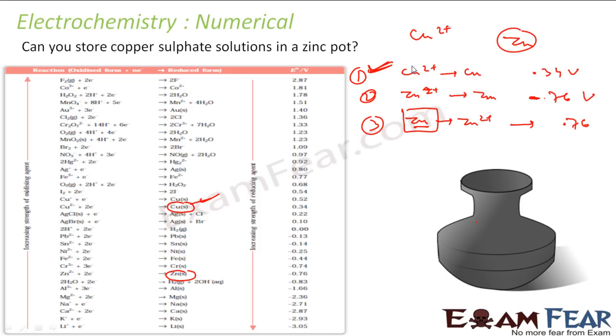So I will compare reaction one and three. If you compare reaction one and three, this is 0.76 volt, this is 0.34 volt. That means reaction three will do. That means zinc will become zinc sulfate. If zinc will become zinc sulfate, so copper will become copper. So I have copper sulfate solution that will become copper and zinc will get dissolved.